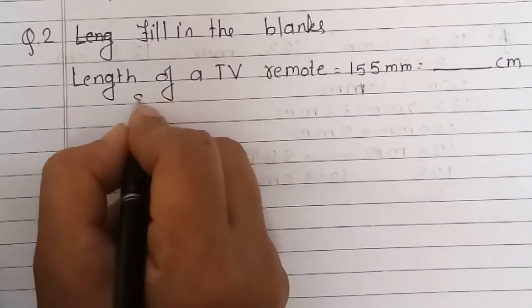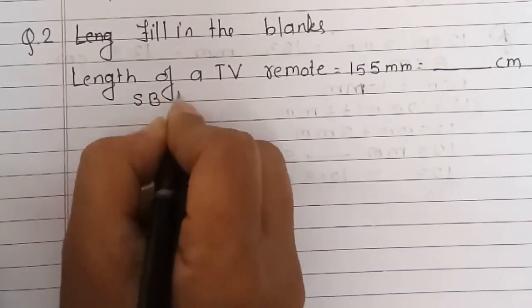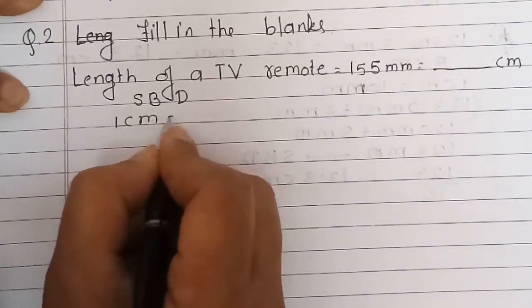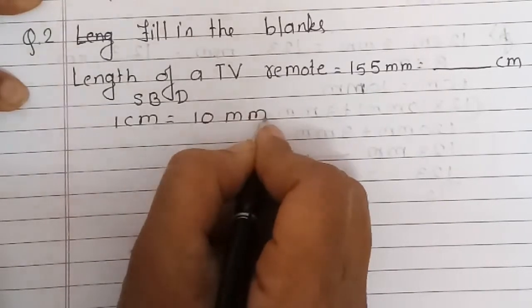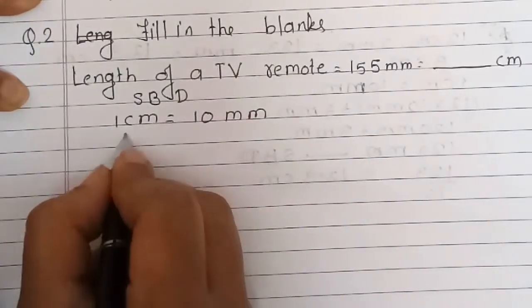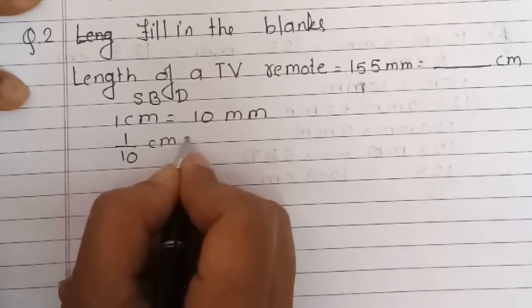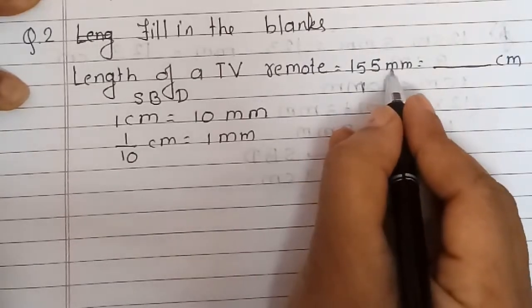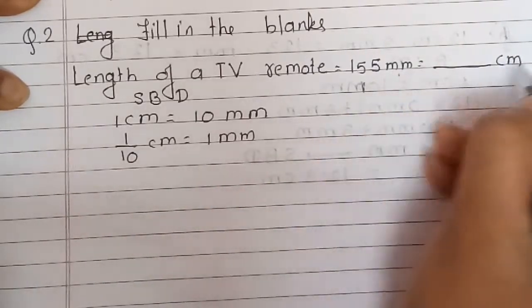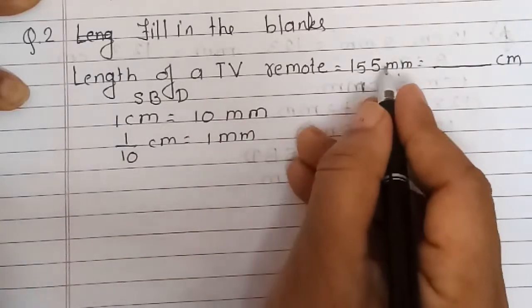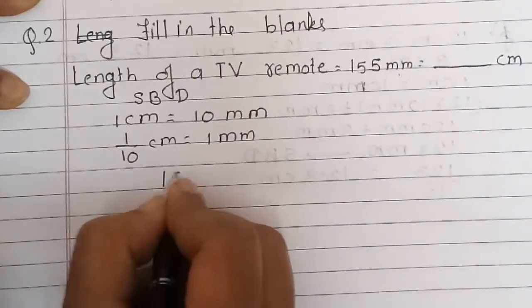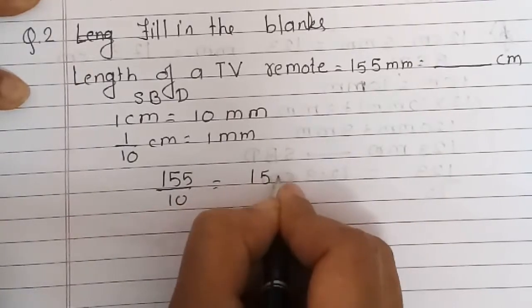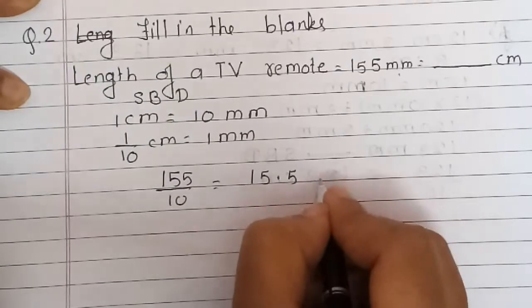Now, small to big — we have to divide. As we know, 1 centimeter is equal to 10 mm, so 1 mm equals 1 upon 10 centimeter. To convert millimeters to centimeters, we divide by 10. So 155 divided by 10 gives us 15.5 centimeters.